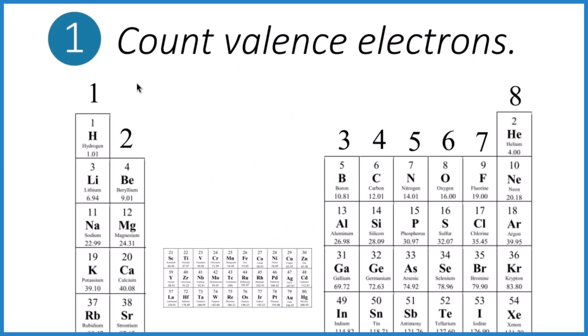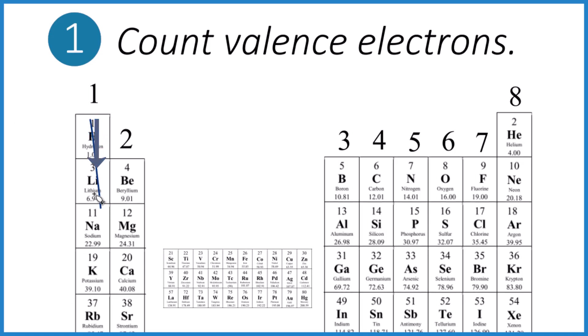Step one, count the valence electrons. This periodic table here is your key resource. Group one here, one valence electron. Group two, those have two. Skip the transition metals.